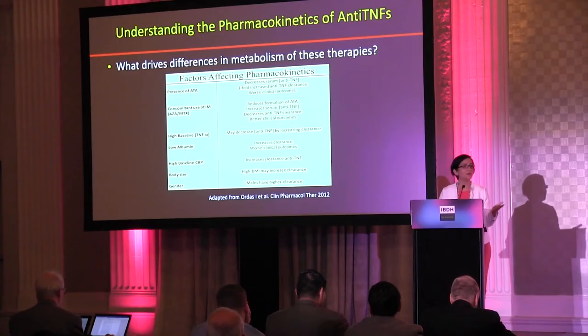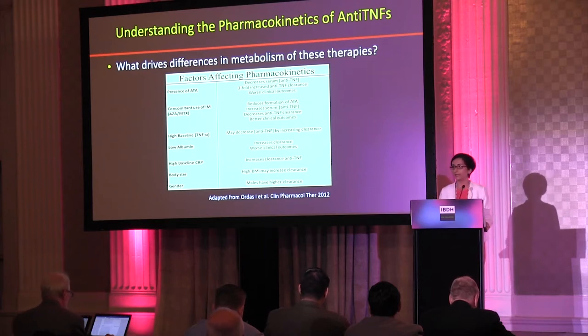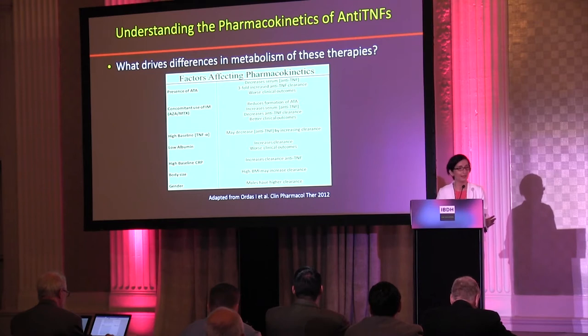What factors actually impact drug clearance or metabolism? High CRP, low albumin, and body mass are factors you're all very well aware of. But the one I want to highlight is the presence of antibodies — the development of immunogenicity — because this is associated with the poorest outcomes and clears the drug most rapidly. In fact, there is about a three-fold decrease in drug availability when antibodies to the respective drug are on board.